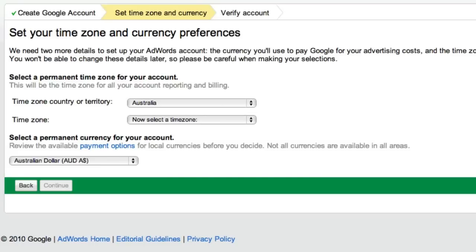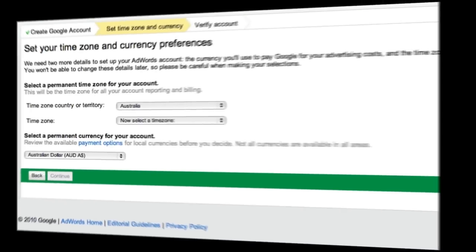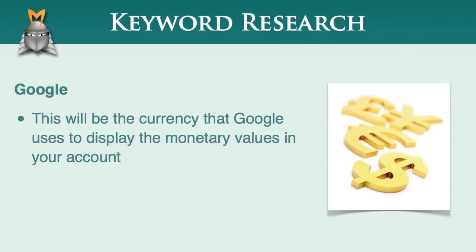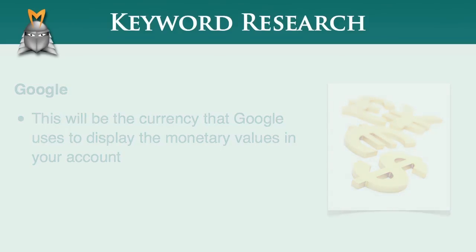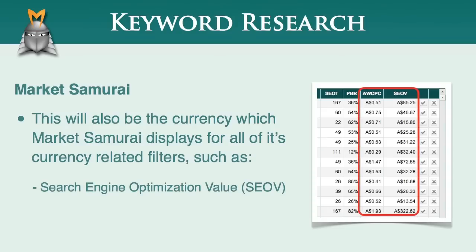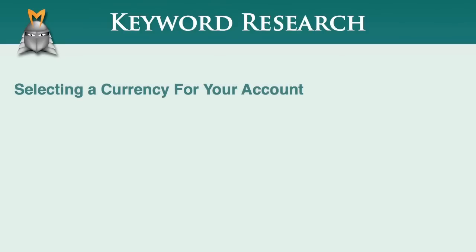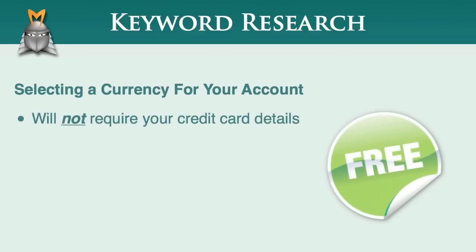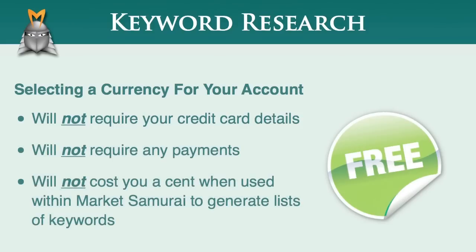To help you make an informed decision, here are a few things to consider when choosing the time zone and currency which are right for you. This will be the currency that Google uses to display the monetary values in your account, should you decide to use AdWords advertising in the future. As a result, this will also be the currency which Market Samurai displays for all of its currency-related filters, such as search engine optimization value and AdWords cost per click. Please note that selecting a currency for your account will not require you to enter any credit card details, will not require you to make any payments whatsoever, and will not cost you a cent when used from within Market Samurai to generate lists of keywords.